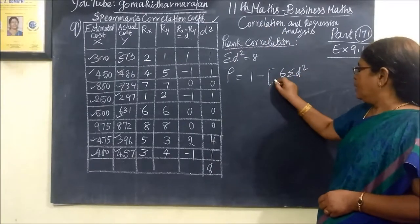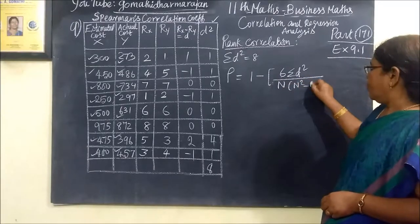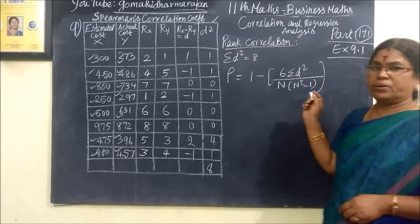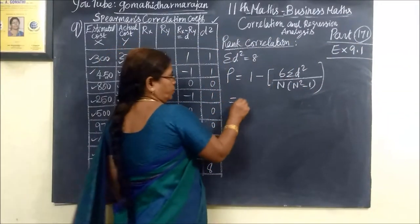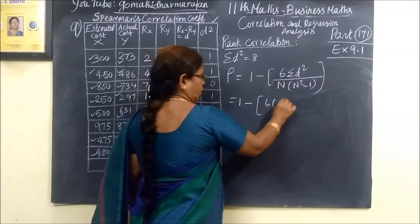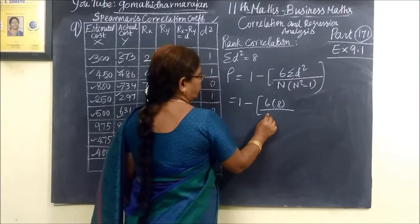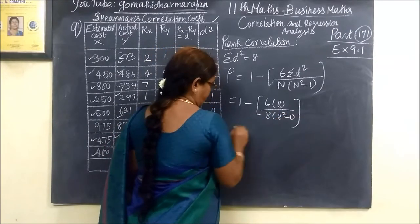n into n square minus 1. This way easier to find that, this one, okay? This one, this one, 1 minus 6. Then you are writing 8. n is 8. That also 8. So 8 square minus 1.